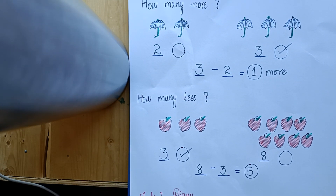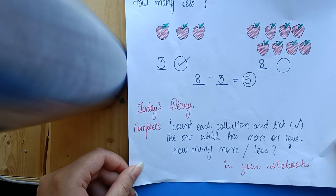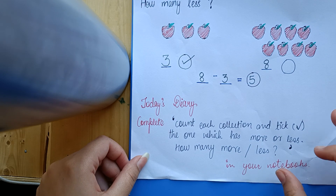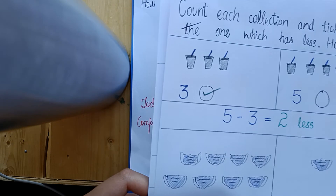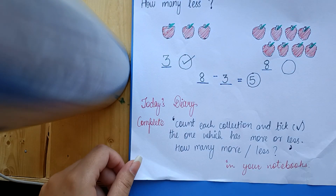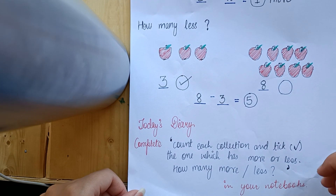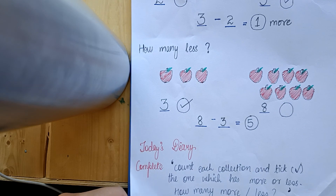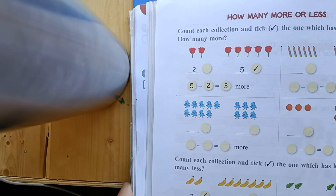This topic was really good. I hope you understood. For homework, look at the topic in your textbook. These are the sums that I have done, and these are the sums that you have to complete — how many more and how many less. You will complete these sums.